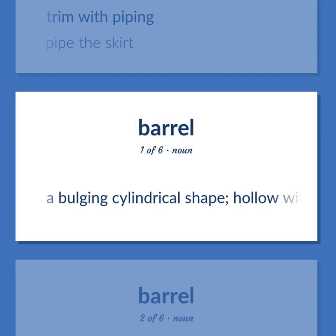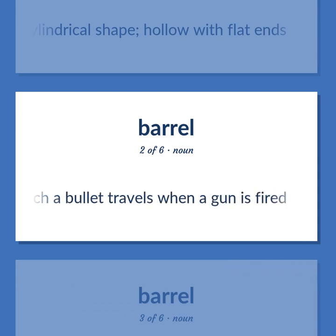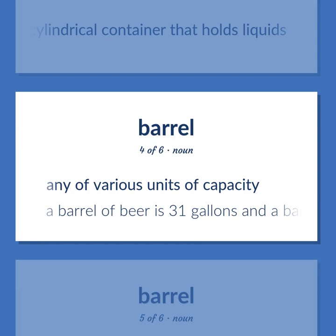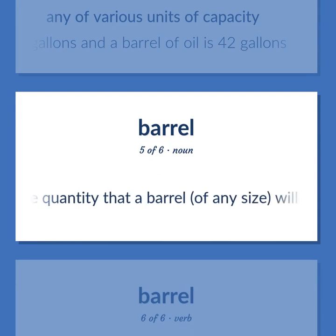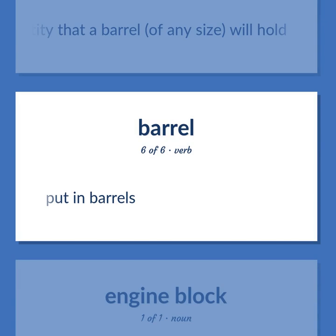Barrel: a bulging cylindrical shape, hollow with flat ends. A tube through which a bullet travels when a gun is fired. A cylindrical container that holds liquids. Any of various units of capacity — a barrel of beer is 31 gallons and a barrel of oil is 42 gallons. The quantity that a barrel of any size will hold. Put in barrels.